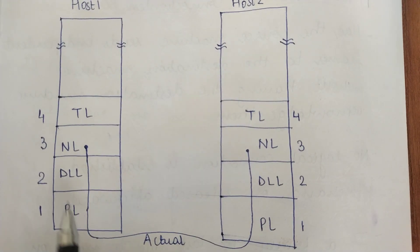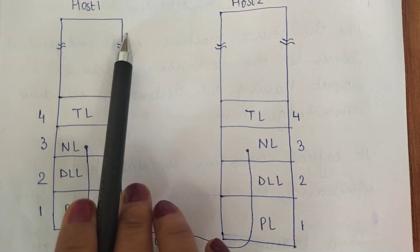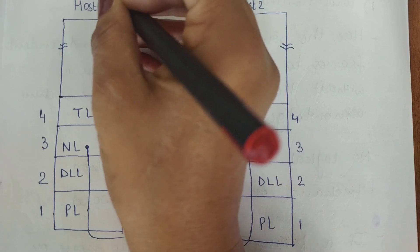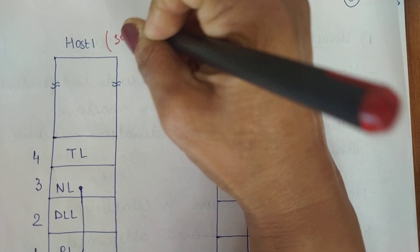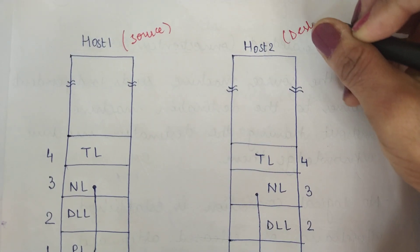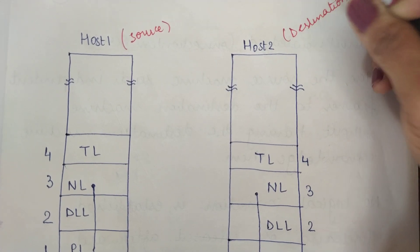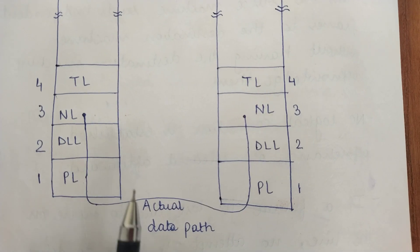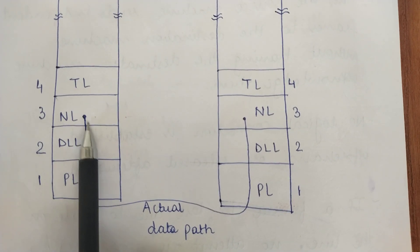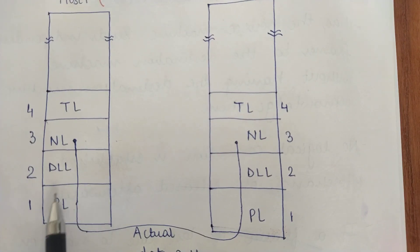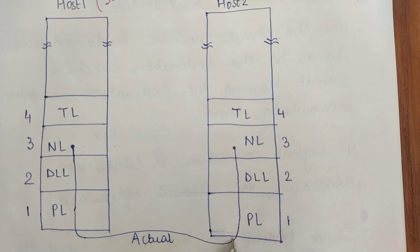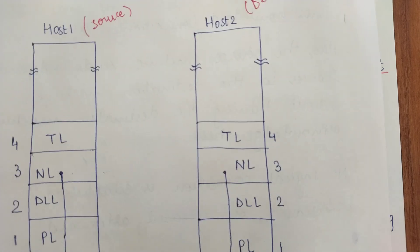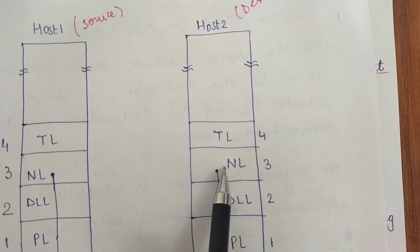This is the actual data path. We have the physical layer, data link layer, network layer, transport layer, and going on to the application layer. This is the source machine and this is the destination machine. We visualize the network layer on the source machine directly transmitting to the network layer on the destination machine, but actually the data is transmitted from the network layer on the source machine down to the data link layer, then to the physical layer, which transmits it to the physical layer of the destination machine, and from there it goes up to the network layer.